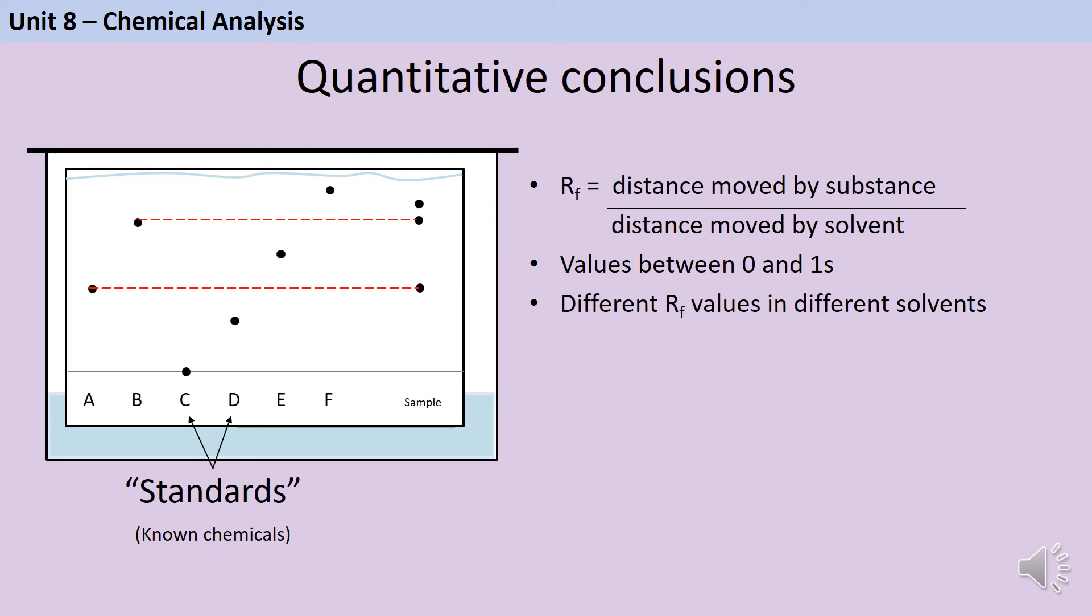And so if a substance is super super soluble and it stays in that solvent for a long time and doesn't get deposited until the very very end, then we're going to have an RF value of 1 because the distance that the substance travels and the distance that the solvent travels will be the same.